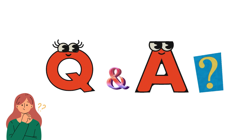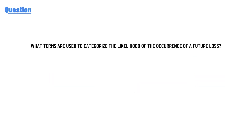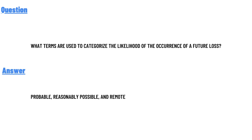Today's question is: what terms are used to categorize the likelihood of the occurrence of a future loss? The correct answer to the question is probable, reasonably possible, and remote.